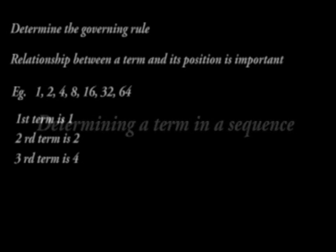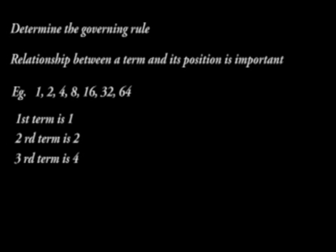Determining a term in a sequence. We must establish the rule governing a particular sequence in order to determine the next term. The relationship between a term and its position on the sequence is important. In our last example, 1, 2, 4, 8, 16, 32, 64, the first term is 1, the second term is 2, fourth term is 8 and so on.